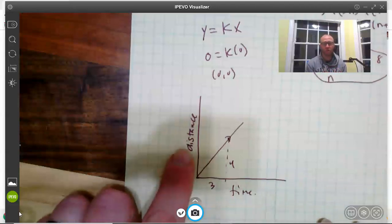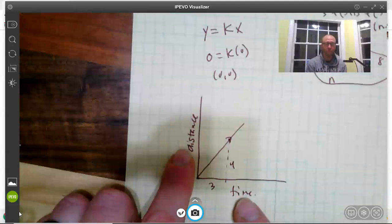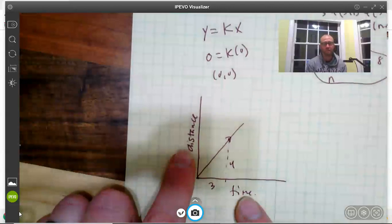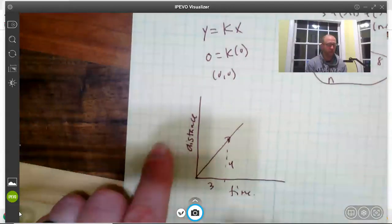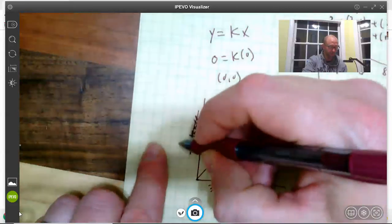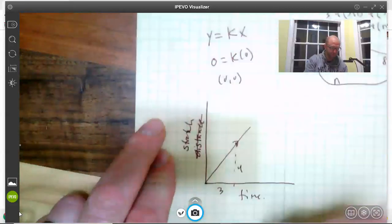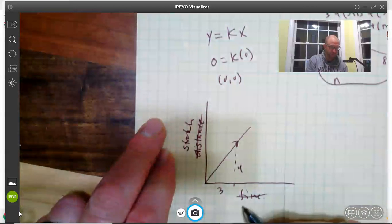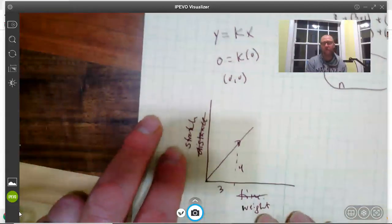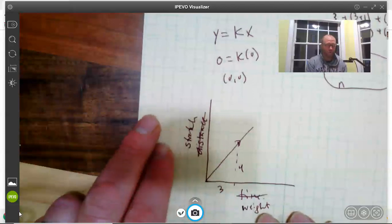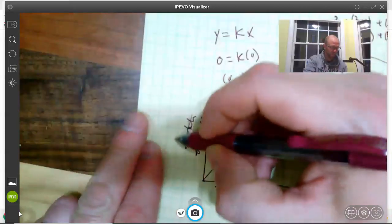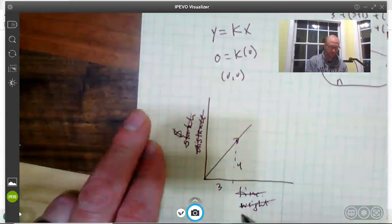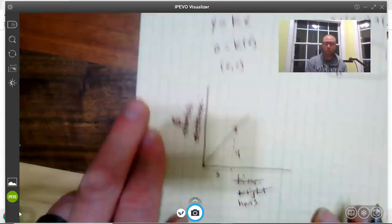The rate is whatever you're measuring on the y-axis per whatever you're measuring on the x-axis. So if it's distance in time, it could be miles per hour, it could be feet per second. We talked about that spring problem; it was stretch per weight, amount of stretch per ounce.